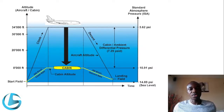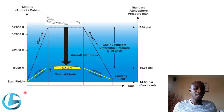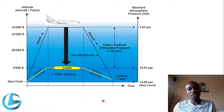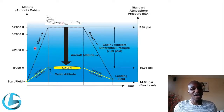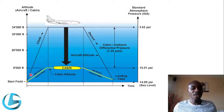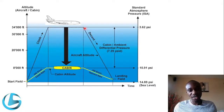Next we look at a diagram to explain how the system works. One axis indicates the aircraft altitude and the other indicates flight time. This shows the climb rate of an aircraft from takeoff to cruise and descent — the aircraft takes off, climbs to 34,000 feet, cruises there, and then descends to the landing field.